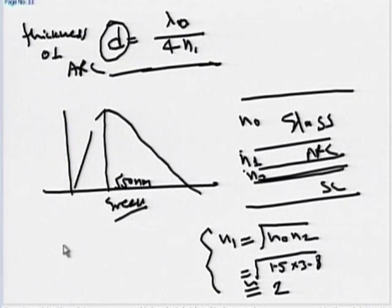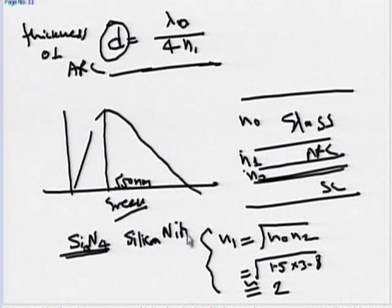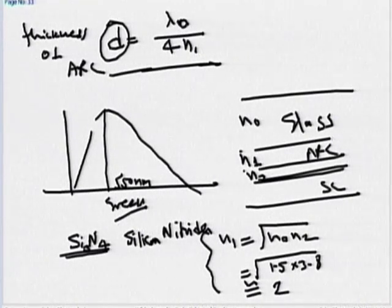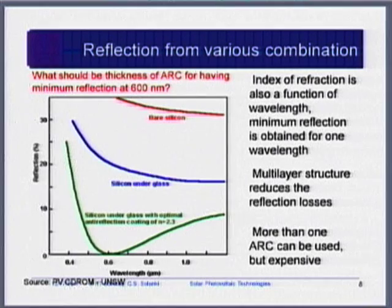In practice, the material used for anti-reflective coating is silicon nitride, Si3N4. Silicon nitride is the most commonly used ARC in commercial silicon solar cells and laboratory solar cells, because it has a refractive index of about 2. In fact, the blue color you see when you look at a solar cell is basically because of the silicon nitride ARC.